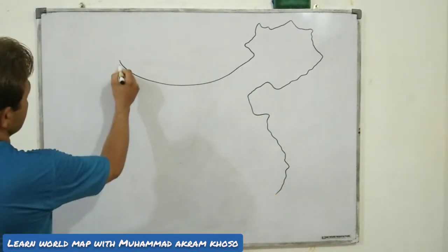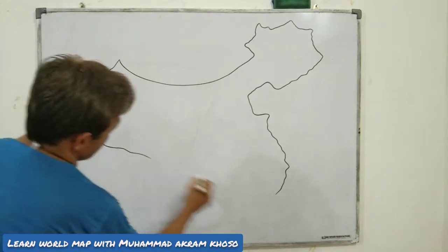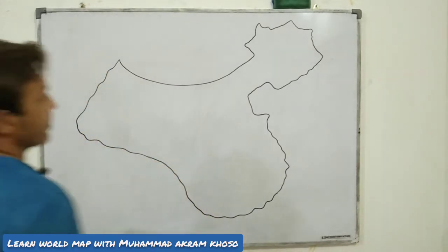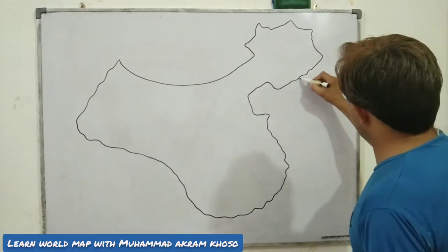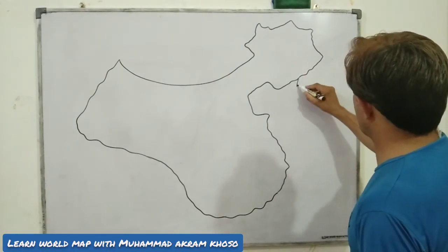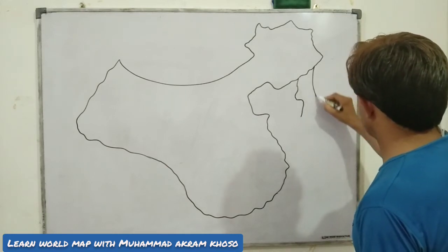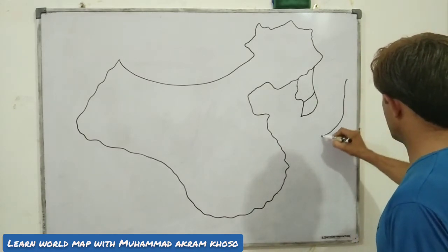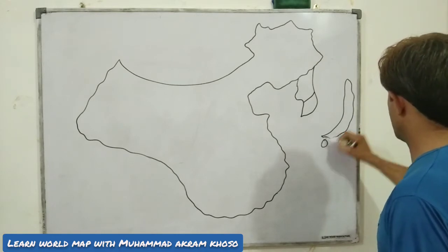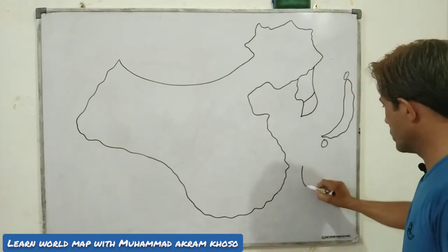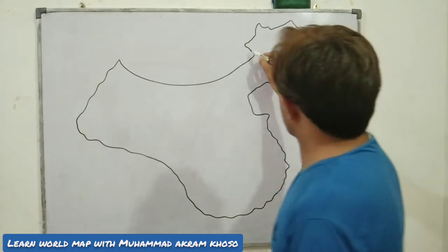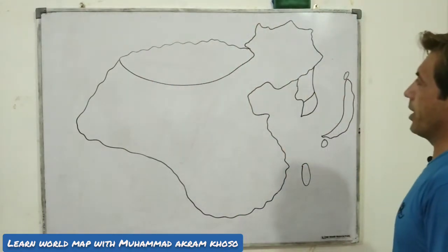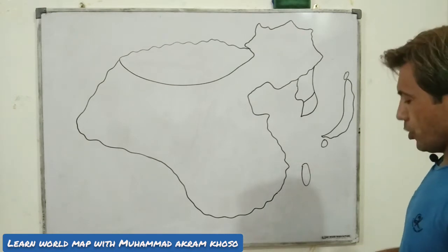This is the map of China. And these two countries we call them South and North Korea. This is Japan, and this one is Taiwan. There's also Mongolia.